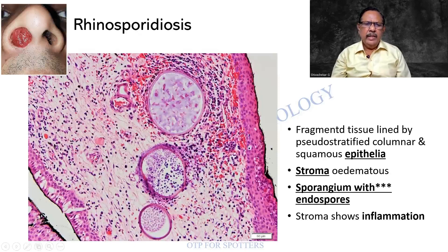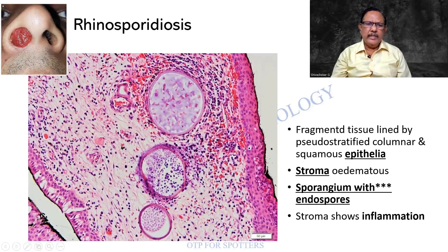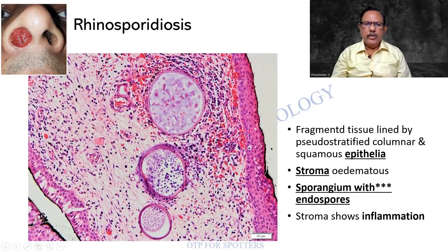Here again I am finding a lesion that is more or less similar — look at the polyp over here. It is lined by squamous epithelium as well as the columnar epithelium and goblet cells seen previously. The stroma here has a lot of edema, empty space, and inflammatory cells including lymphocytes. More importantly, there are large circular structures and some of them are having lymphocyte-like spores inside. This is called the sporangium and what is inside is called the endospore. So: sporangium with endospores, polyp lined by pseudostratified columnar or squamous epithelium. The diagnosis is rhinosporidiosis.